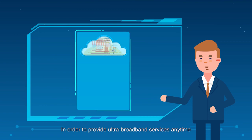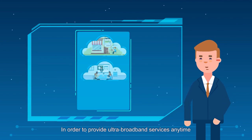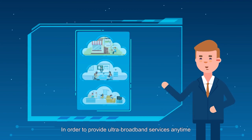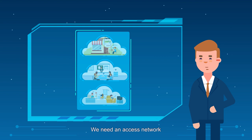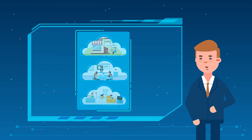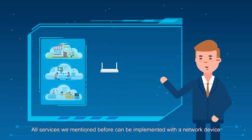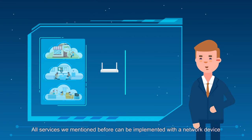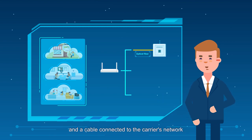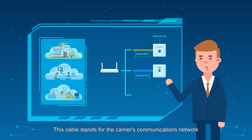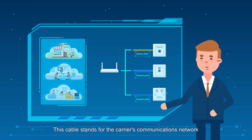In order to provide ultra-broadband services anytime, wherever they are needed, we need an access network. All services we mentioned before can be implemented with a network device and a cable connected to the carrier's network. This cable stands for the Carrier's Communications Network.